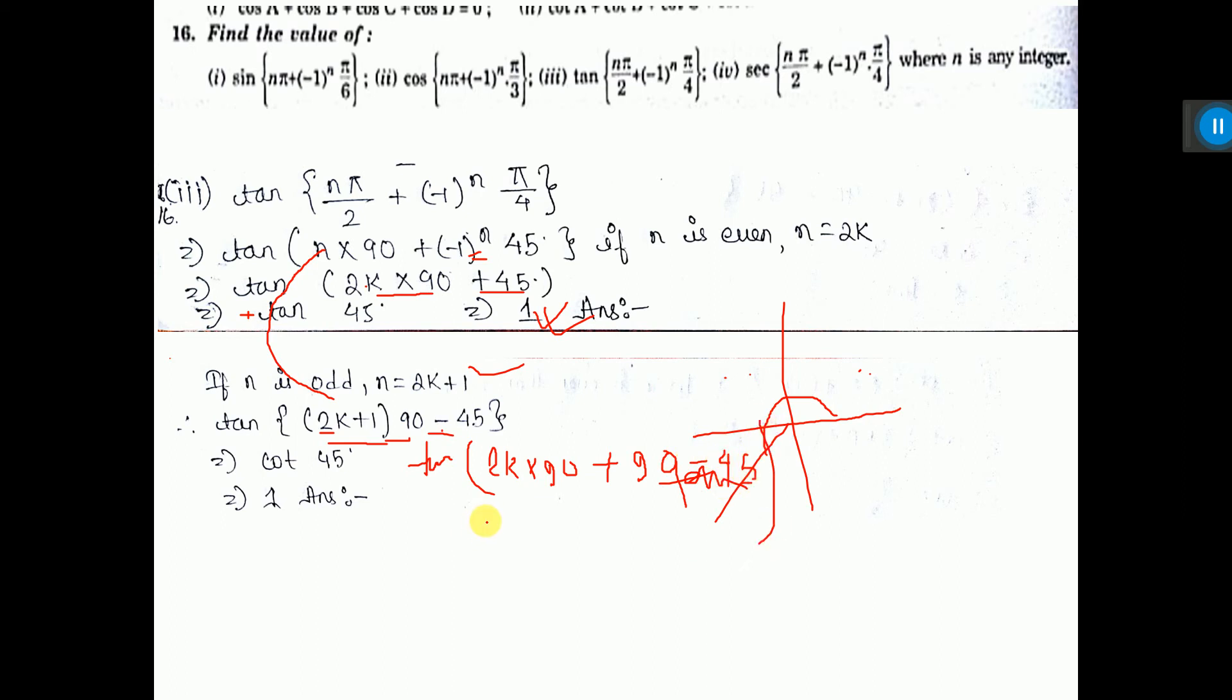Now see, previous sum you have seen, if you consider this thing theta. Tan 2k into 90 plus theta, that is tan theta. So here also, tan theta will come.